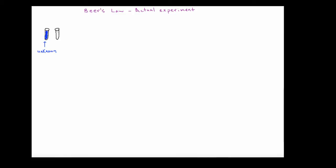This is not some arbitrary experiment done to torture chemistry students. The Beer's Law experiment using the spectrophotometer is common in research labs, especially in biochemistry, where you're quantitating protein, DNA, and RNA solutions. This is an important skill utilized quite often in benchtop chemistry. So you have this unknown copper sulfate solution — we don't know the molarity — and the other solution presented is also copper sulfate but at a known concentration: 0.5 molar.